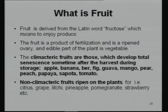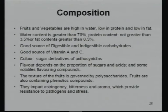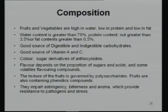A fruit is the ripened ovary. You must know the difference between climacteric and non-climacteric fruits. Non-climacteric fruits ripen on the plant itself, while climacteric fruits like apple and banana can mature during storage. Fruits have high moisture content — around 80–90% — with low protein and fat. They are a good source of digestible carbohydrates, vitamins A and C, and provide color and flavor.